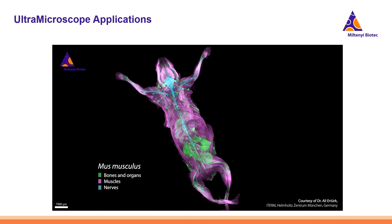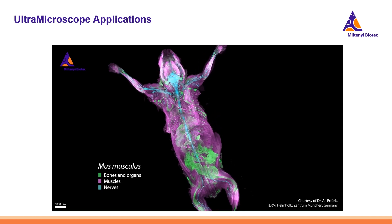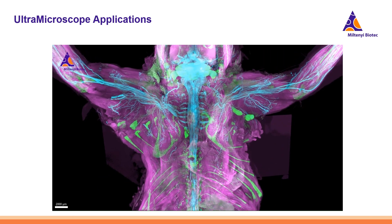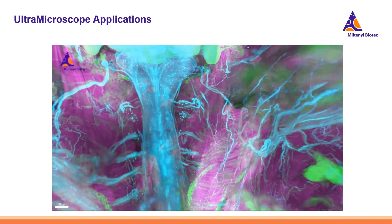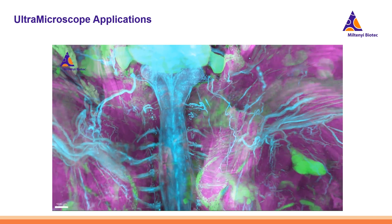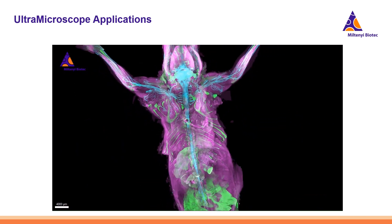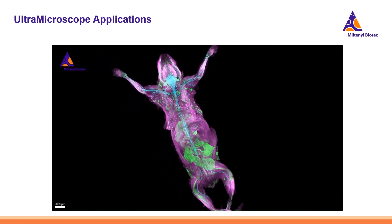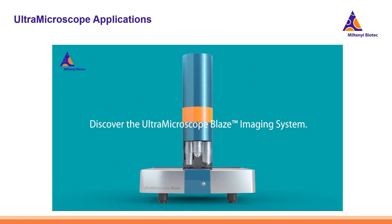Here is another compelling final example of a 3D image obtained using the Ultra Microscope, again from Dr. Ali Ertürk's lab. The rendered image stack effectively produces a captivating 3D visualization. To highlight different structures, fluorescent antibodies were used to stain the bones in green, muscles in violet, and nerves in teal color — showcasing what one can achieve using the light sheet microscope, particularly the Ultra Microscope Blaze.